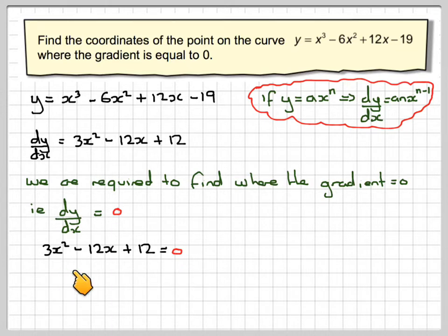We notice that 3, 12, and 12 are all divisible by 3. So it's going to give me x squared minus 4x plus 4 is equal to 0.